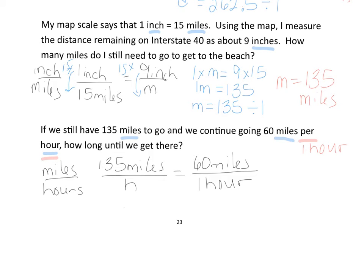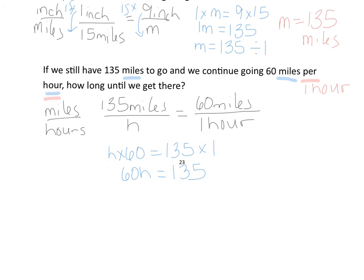So we say h times 60 and 135 times 1. h times 60 is 60h. 135 times 1 is 135. We then have h is going to equal 135 divided by 60. And we get that h is going to equal 2.25 hours.